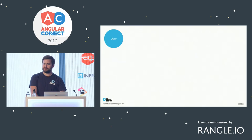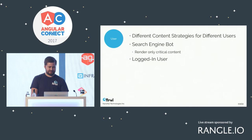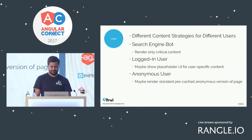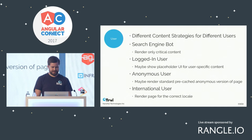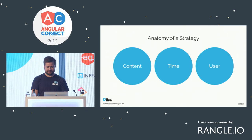The last aspect is the user. Different users have different needs relevant to pre-rendering. A search engine is one of your users — for them, you probably want to render just the critical content and render it often so it's fresh. For logged-in users, there are probably more interactive or user-specific elements on the page, but a lot of times it's not necessary to pre-render all of those. An anonymous user could just get a pre-cached anonymous page. And for international users, we want to render the correct locale — even if we have an app shell, we want it with the correct locale.